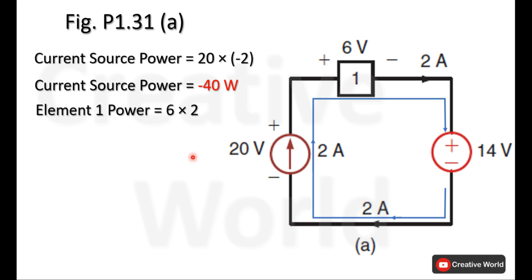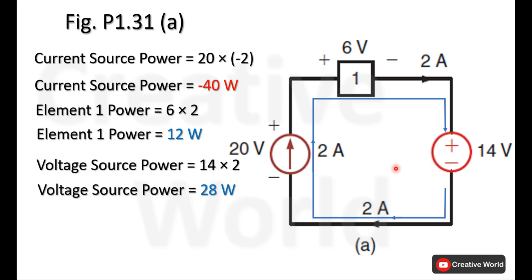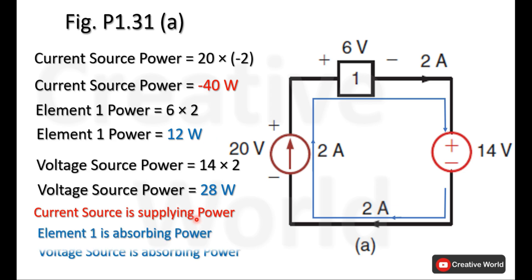Similarly, element 1 power will be the voltage across it — 6 volts — multiplied by the current through it — 2 amperes. In this case, current is entering from the positive terminal and leaving from the negative terminal, so it will be taken with a positive sign, giving element 1 a power of 12 watts. The voltage source power is 14 volts multiplied by 2 amperes; current enters from the positive terminal, so the power is 28 watts. The current source is supplying power, while element 1 and the voltage source are absorbing power.